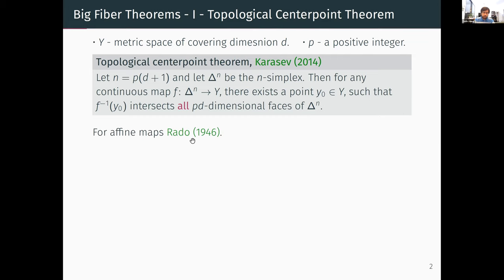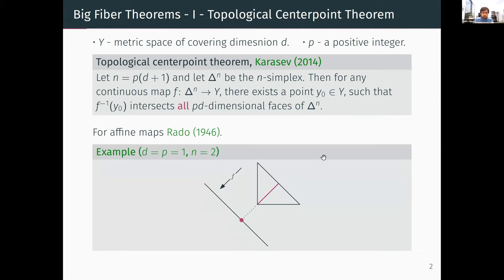For affine maps this was proved by Rado; Karasov proved it for all continuous maps. As a simple example, fix d=1 and p=1 so N=2: we have a two-simplex projected onto a line, and there is a point whose fiber intersects all three one-dimensional faces of the simplex.